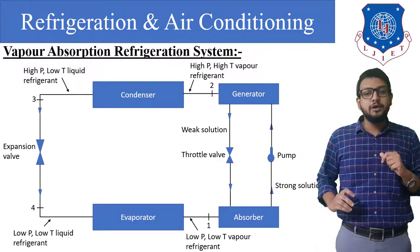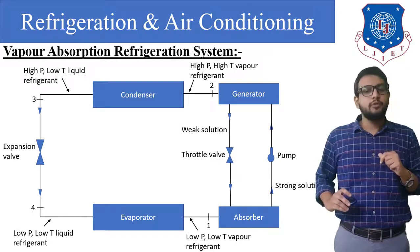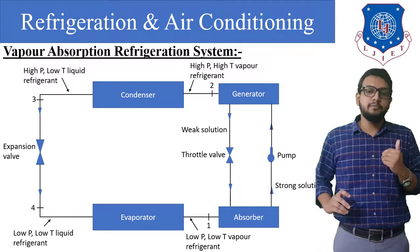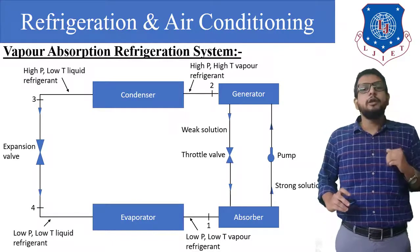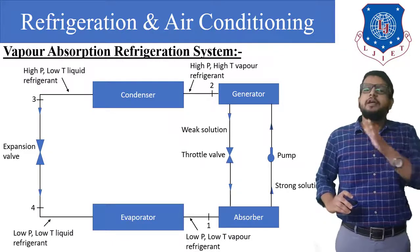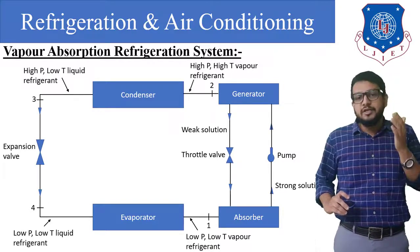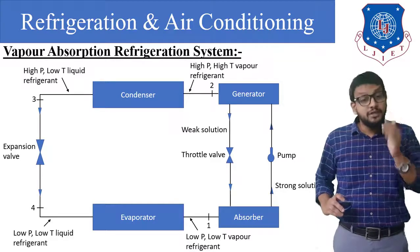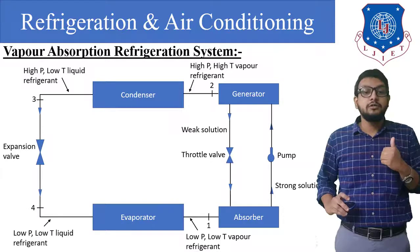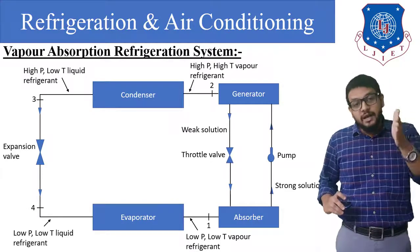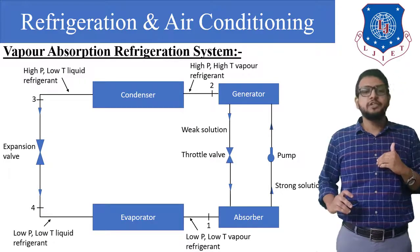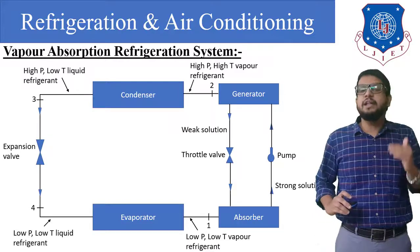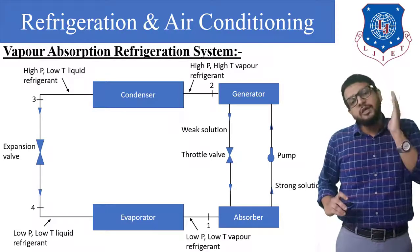Point number one represents the exit of the evaporator — that is, low pressure, low temperature vapor refrigerant. Point number two represents the exit of the generator. Point number three represents the exit of the condenser and inlet to the expansion device — high pressure, low temperature liquid refrigerant. Point number four represents the exit of the expansion device and inlet to the evaporator — low pressure, low temperature liquid refrigerant.